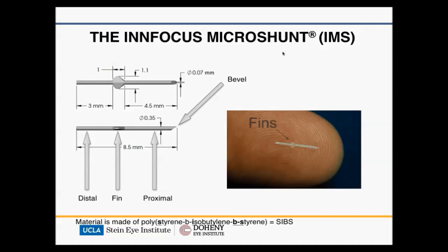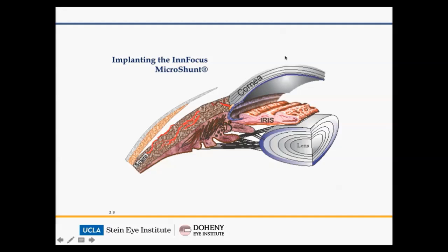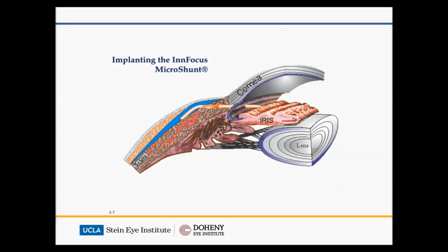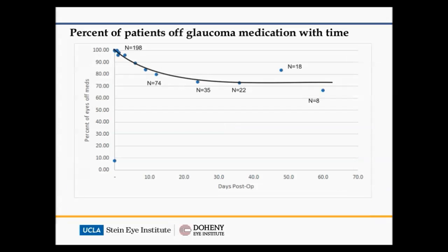It's a very small micro shunt made out of a material called SIBS, which is supposed to be very non-reactive and not create a lot of fibrosis and scarring. Schematically, you can see the surgery: the conjunctiva is opened, the tube is inserted, flow is established, and the conjunctiva is closed. There is an application of mitomycin, just as you would with trabeculectomy. The preliminary data from outside United States centers shows a reduction of IOP from the mid-20s down to the low teens with this procedure.